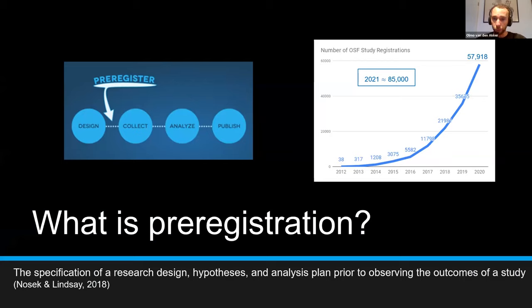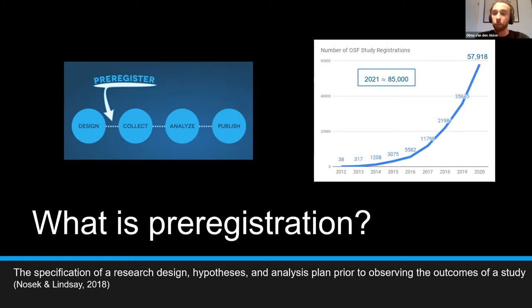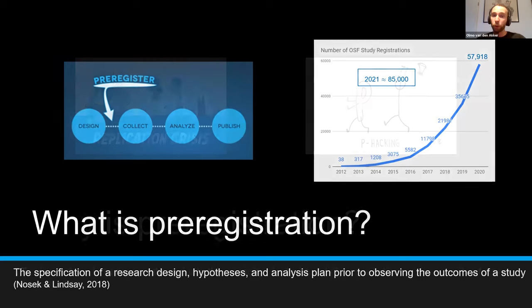So in 2012, we had 38 pre-registrations on the Open Science Framework. And Brian Nosek actually expects that at the end of this year, we would have 85,000 registrations logged on the Open Science Framework. So it's really gaining popularity, which begs the question: why do so many people pre-register their study?